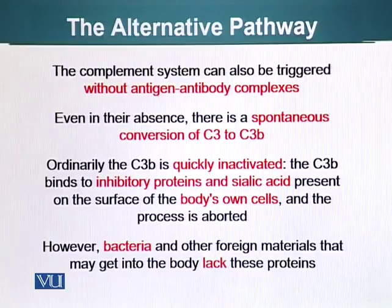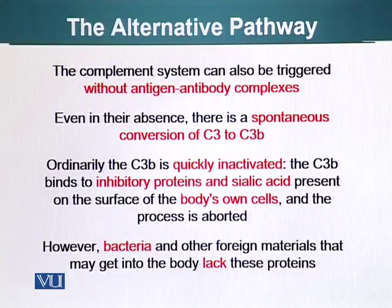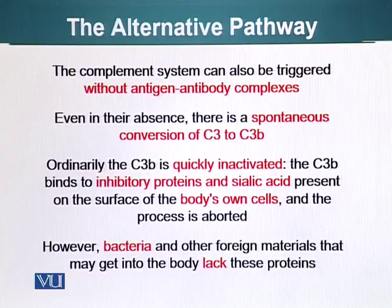Initially we talked about needing C1 protein, which has a protein complex with enzymatic activity, required to cleave C3 into C3B and C3A. Now, this can happen spontaneously also. Ordinarily, C3B is quickly inactivated because our body cells have inhibitory molecules including sialic acid, which neutralizes C3B and prevents it from destroying our body cells.